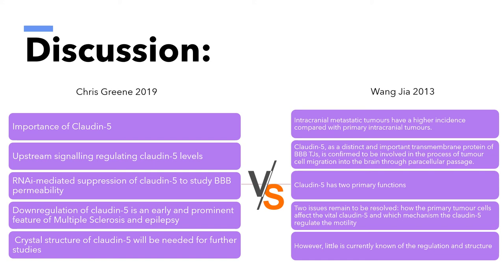Also, downregulation of claudin-5 is an early and prominent feature of multiple sclerosis and epilepsy. In addition, there is a lack of crystal structure of claudin-5 and of how exactly it interacts to form the tight junction strands. In the paper by Wang, intracranial metastasis tumors have a higher incidence compared with primary intracranial tumors, and claudin-5 has been confirmed to be a distinct and important protein of the BBB.